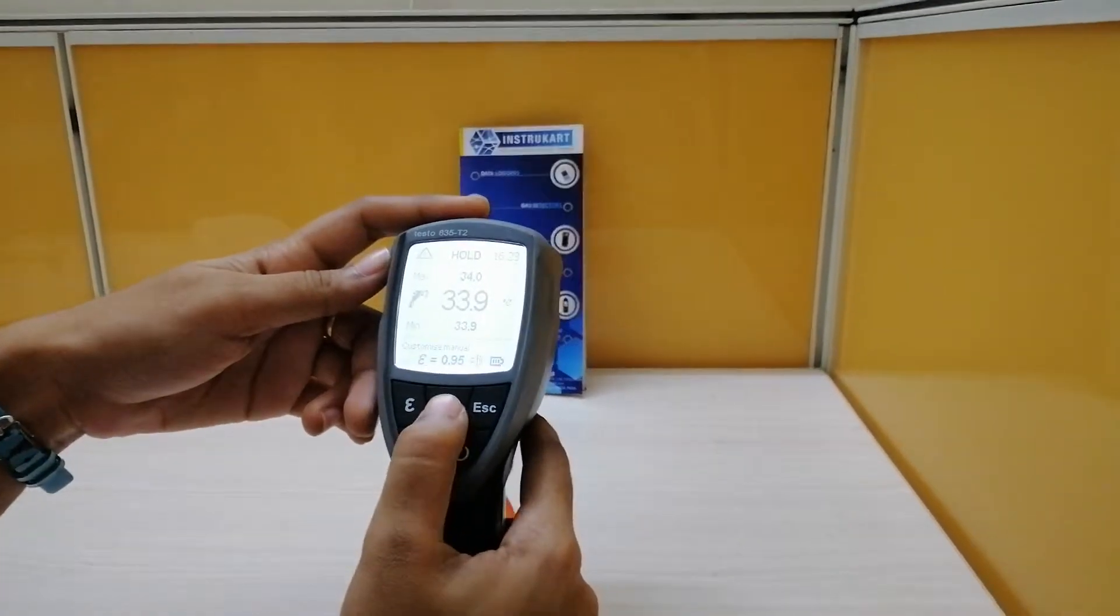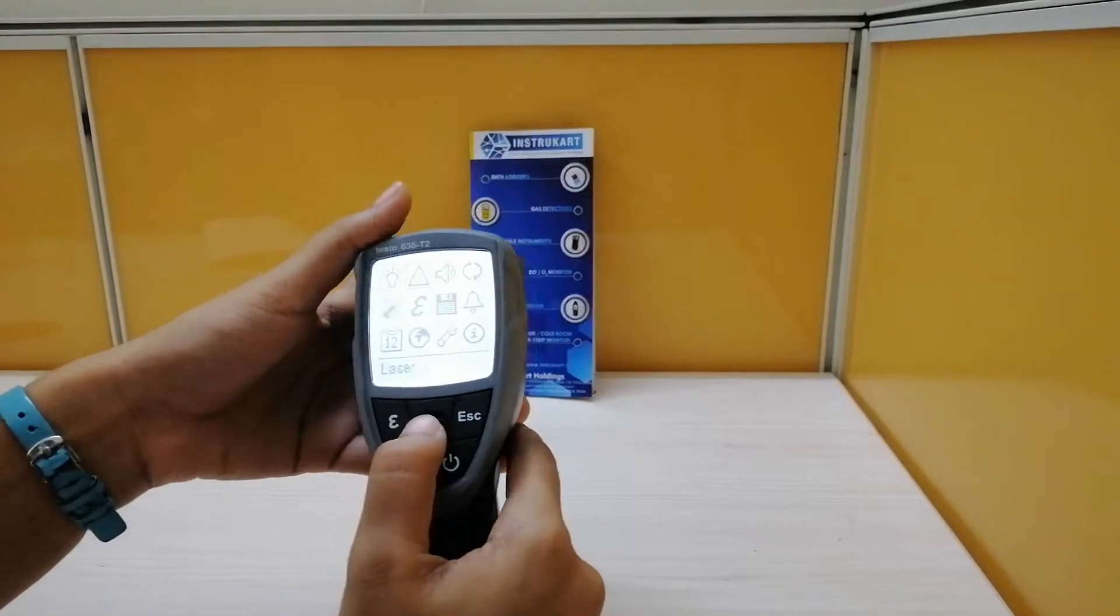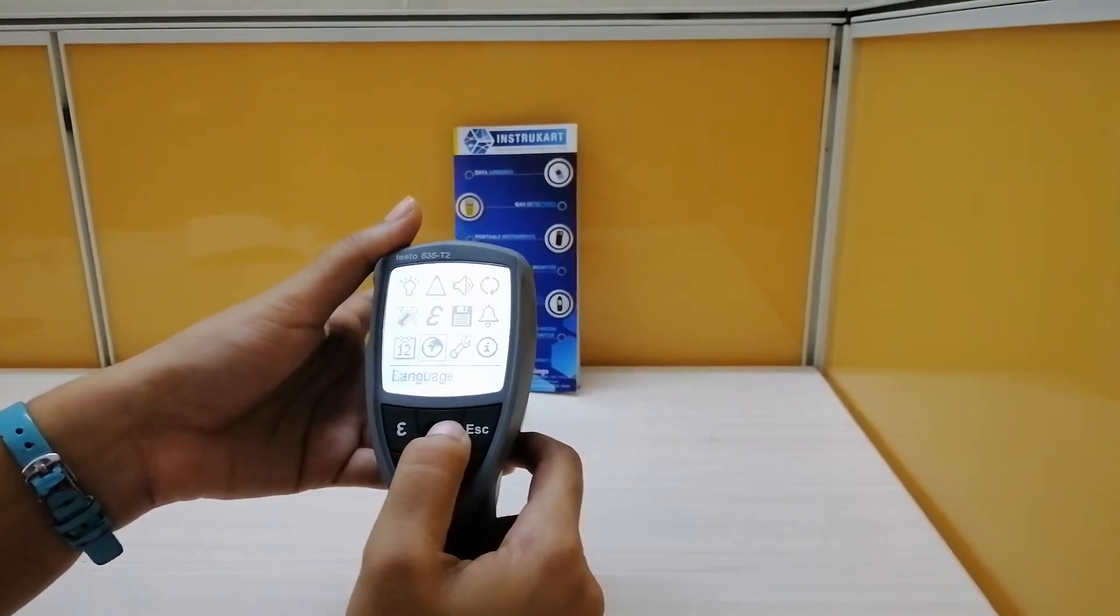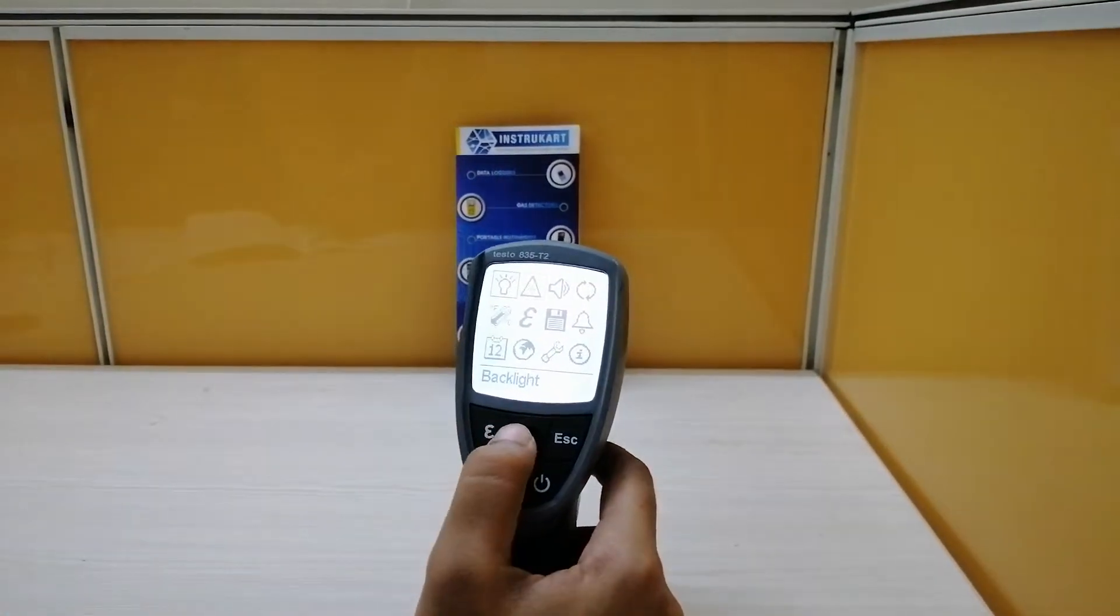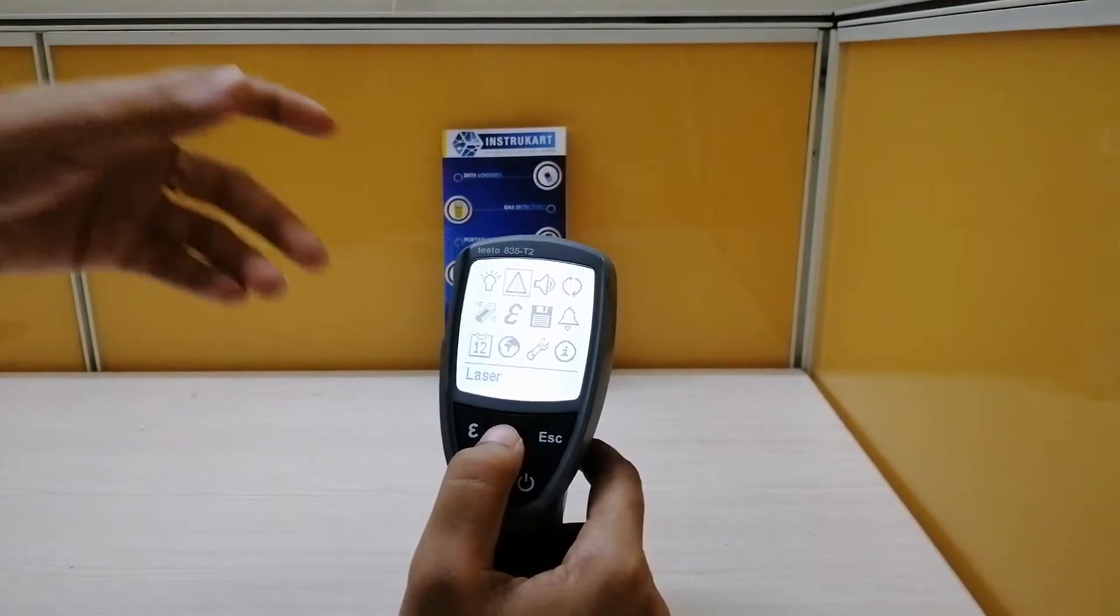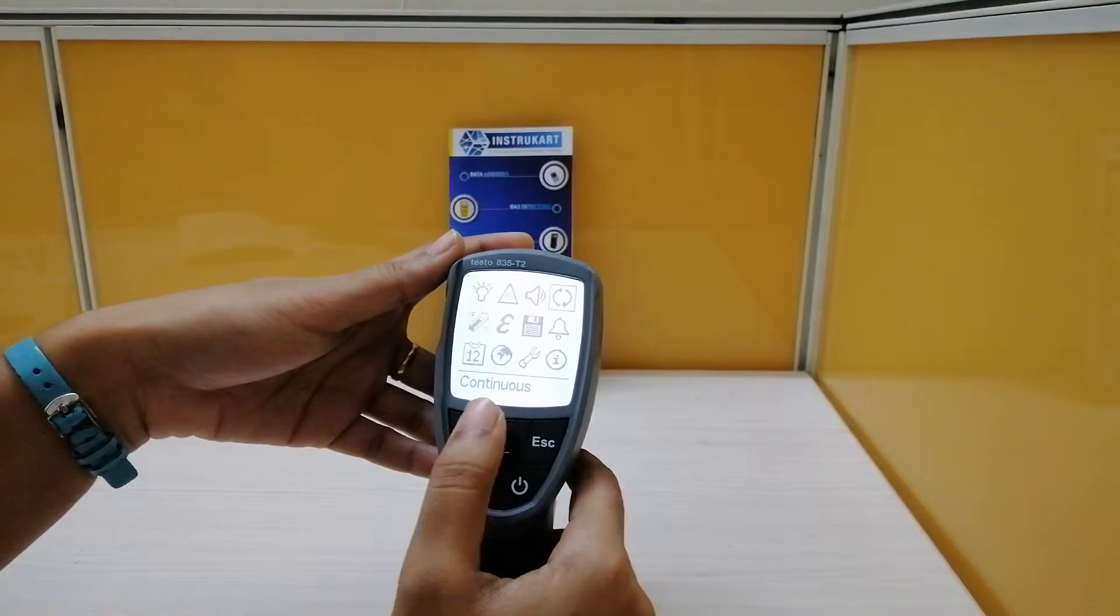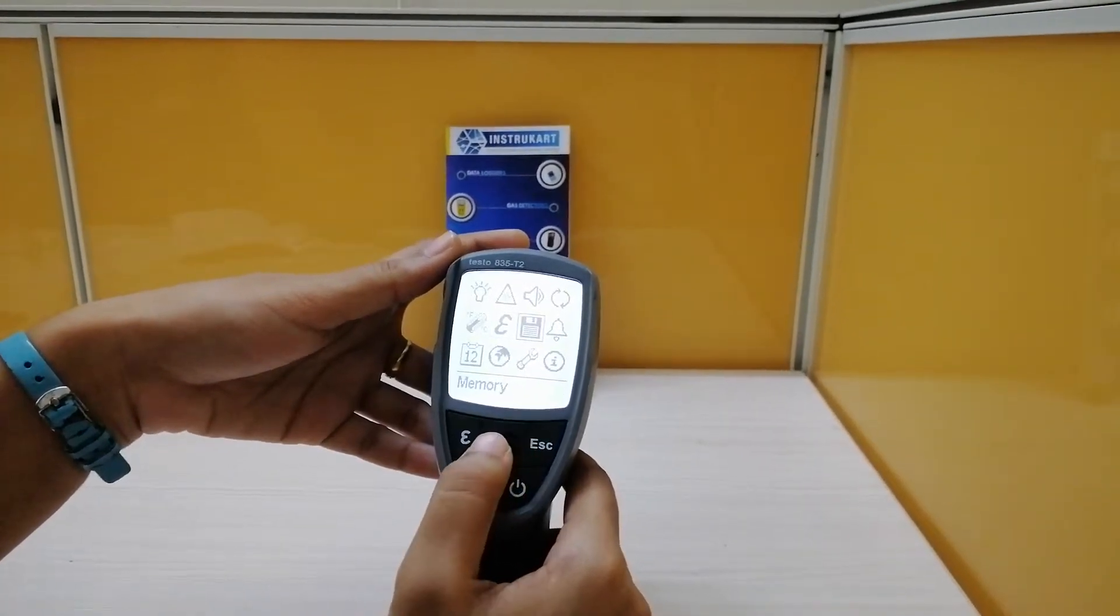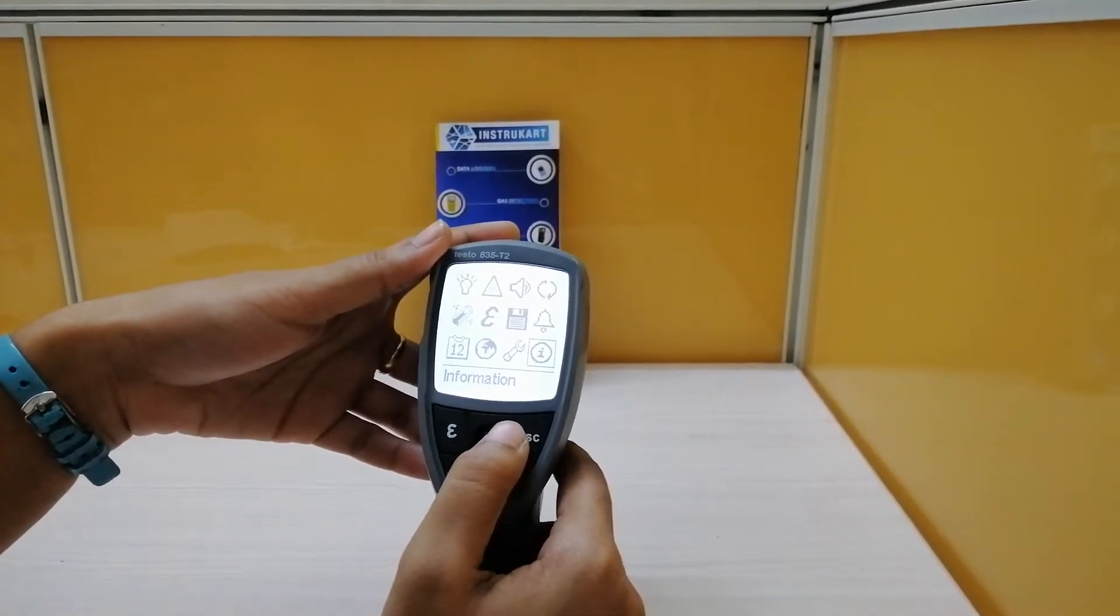Let me show you the settings. Using the joystick, you can navigate through the menu. This is the backlight, laser which is continuous, sample, beeper continuous, units, emissivity, memory, alarm function, information, reset factory settings.